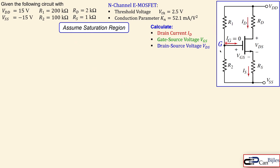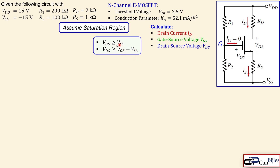We assume that the saturation region is valid — the MOSFET works in the saturation region and the current is constant, so we can use the square-law expression for drain current as a function of vgs. For the saturation region we need to fulfill two conditions: vgs must be greater than or equal to the threshold voltage (2.5 V), and vds must be greater than vgs minus the threshold voltage.